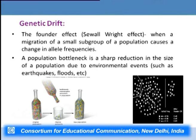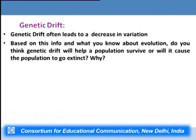The founder effect and bottleneck effect are prominent aspects of genetic drift that lead to significant random changes in allelic frequency. Genetic drift often leads to a decrease in variation because the small initial population passing on alleles to the next generation has limited diversity at any given locus.